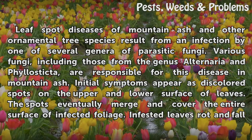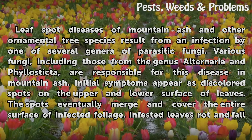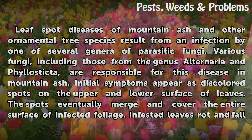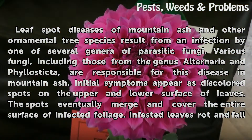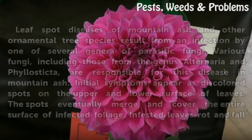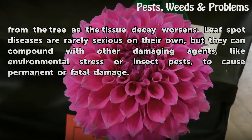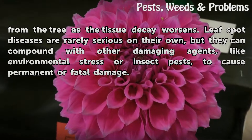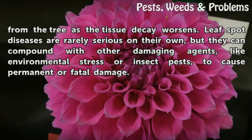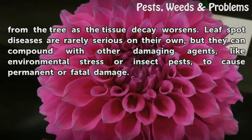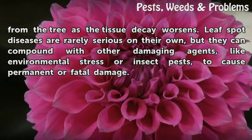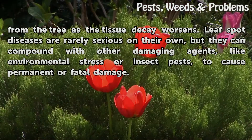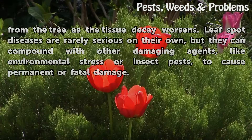Initial symptoms appear as discolored spots on the upper and lower surface of leaves. The spots eventually merge and cover the entire surface of infected foliage. Infested leaves rot and fall from the tree as the tissue decay worsens. Leaf spot diseases are rarely serious on their own, but they can compound with other damaging agents, like environmental stress or insect pests, to cause permanent or fatal damage.